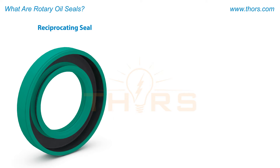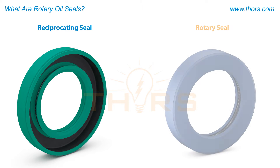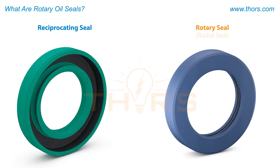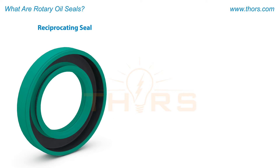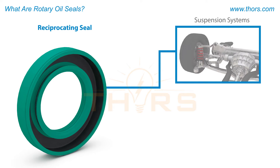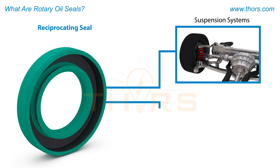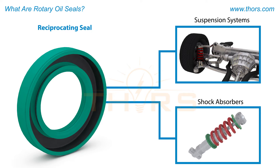Two prominent types are reciprocating seals and rotary seals, also known as radial seals. Reciprocating seals are used in applications where parts interact in up-and-down movement, such as suspension systems and shock absorbers.